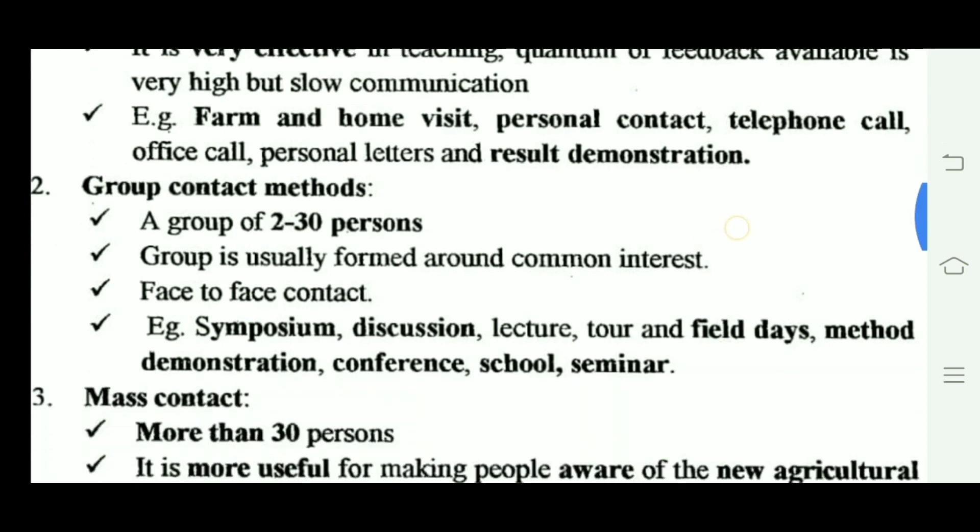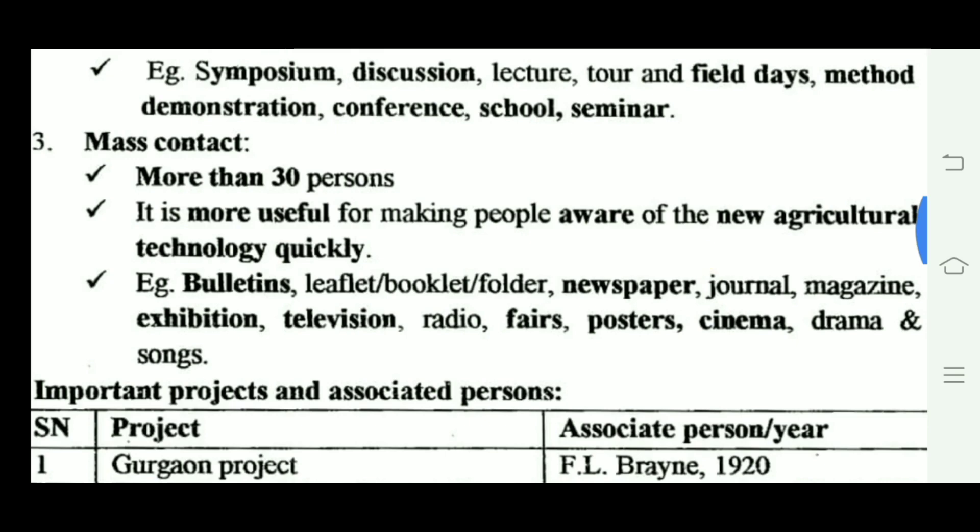Group contact methods involve two to thirty percent of people. Coverage is broader than individual contact, but feedback may be limited. Examples include symposiums and discussions. Mass contact methods cover more than thirty percent of the population.